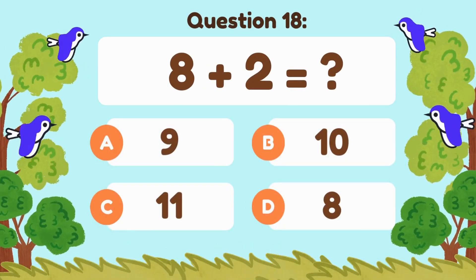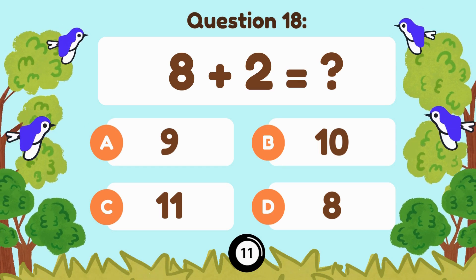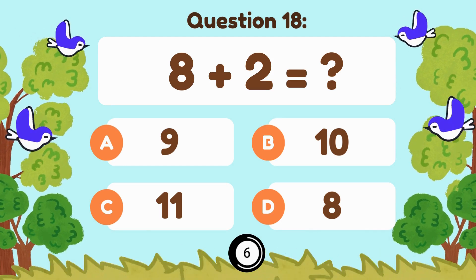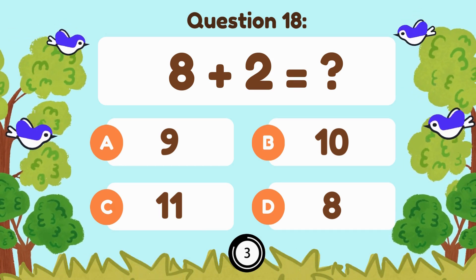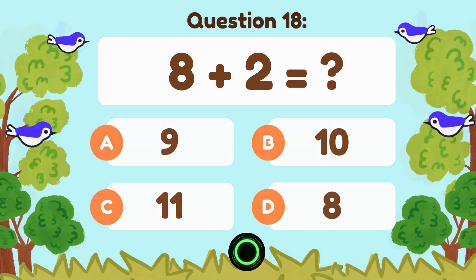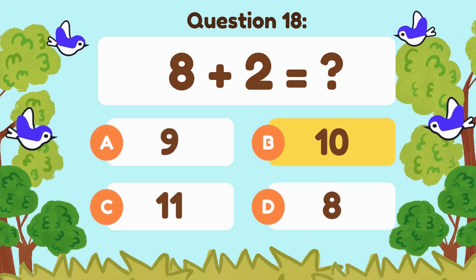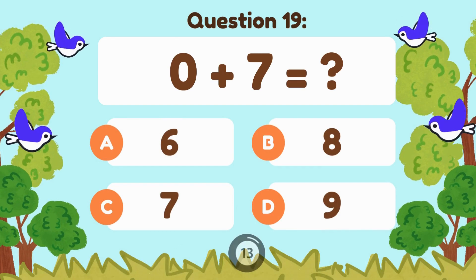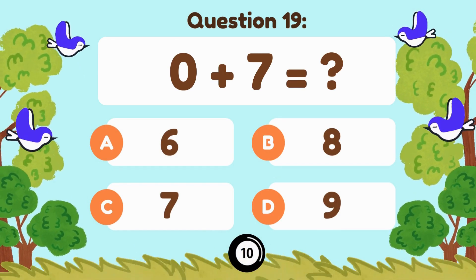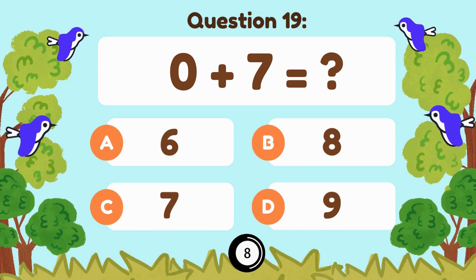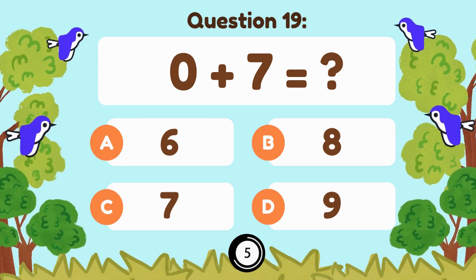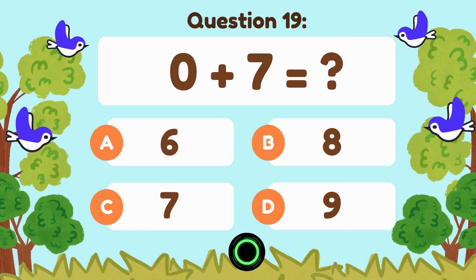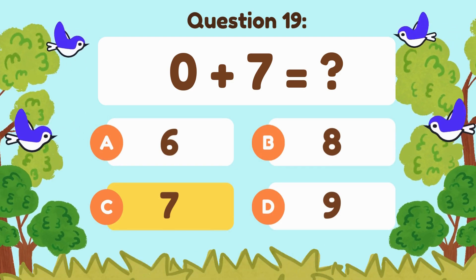8 plus 2 equals... 8 plus 2 is equal to 10. 0 plus 7 equals... 0 plus 7 is equal to 7.